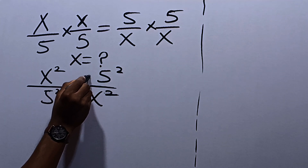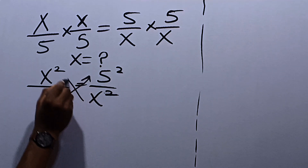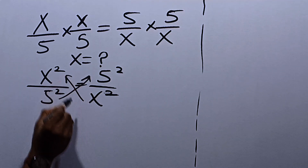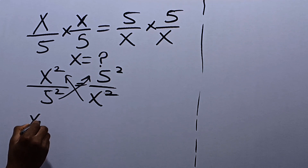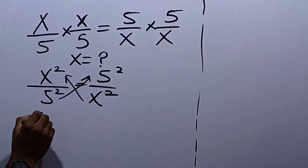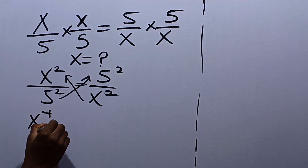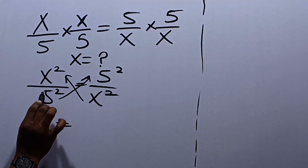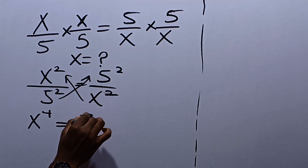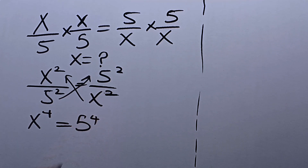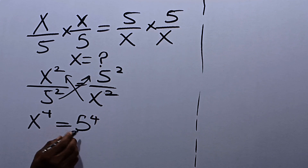Let's cross multiply. We have x squared times x squared, which is x raised to power 4, equal to 5 squared times 5 squared, which is 5 raised to power 4. Hence, we have x raised to power 4 is equal to 5 raised to power 4.